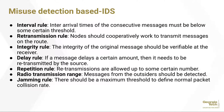For misuse detection-based IDS, there are several rules: the interval rule, where inter-arrival times of consecutive messages must be below a certain threshold; the retransmission rule, where nodes should cooperatively retransmit messages on the route; the integrity rule, where integrity of the original message should be verifiable at the receiver; the delay rule, where messages delayed beyond a certain amount must be retransmitted by the source; the repetition rule, where retransmissions are allowed up to a certain number; the radio transmission range rule, where messages from outsiders should be detected; and the jamming rule, where a maximum threshold defines normal packet collision rates.